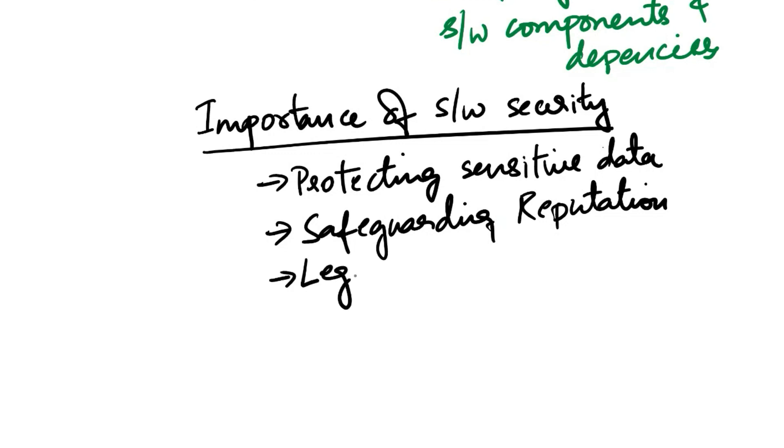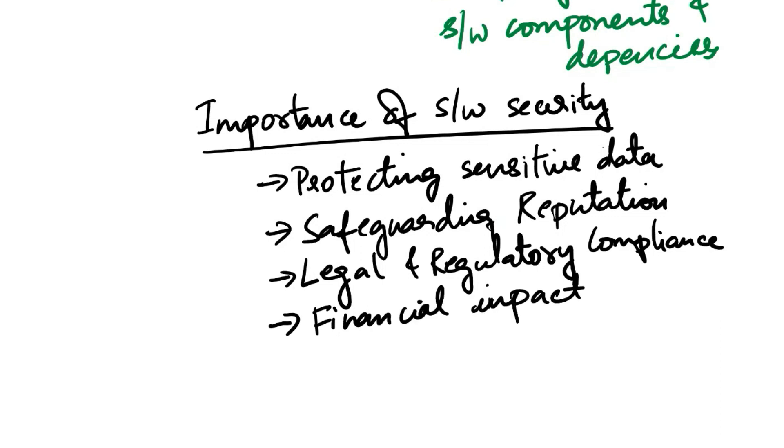Next is legal and regulatory compliance. Many industries are subject to strict data protection and privacy regulations like GDPR and HIPAA. Non-compliance can lead to legal consequences and hefty fines. Next is financial impact. Security breaches can result in direct financial losses through fraud as well as indirect costs related to incident response, legal fees, and damage control.